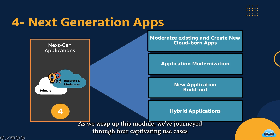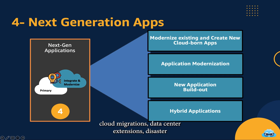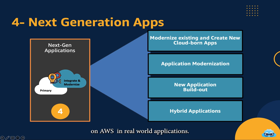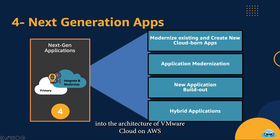As we wrap up this module, we've journeyed through four captivating use cases: cloud migrations, data center extensions, disaster recovery, and building next-generation applications. These scenarios showcase the incredible potential of VMware Cloud on AWS in real-world applications. In our next module, we'll dive into the architecture of VMware Cloud on AWS, unraveling the technical intricacies that make this solution a game-changer.